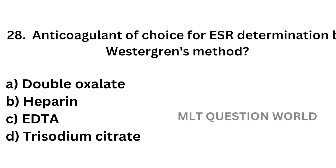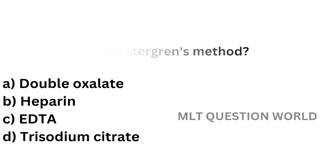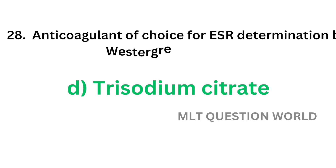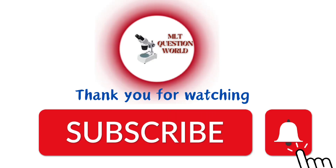Question number 28. Anticoagulant of choice for ESR determination by Westergren's method: Option A, double oxalate; Option B, heparin; Option C, EDTA; Option D, trisodium citrate. The correct answer is Option D, trisodium citrate. Trisodium citrate is the anticoagulant of choice for ESR determination by Westergren's method.